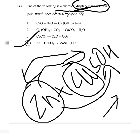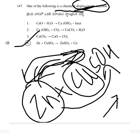Displacement means chemical names change. In a displacement reaction, one element replaces another. For example, Zn + CuSO4 → ZnSO4 + Cu. This is a chemical displacement or replacement reaction.